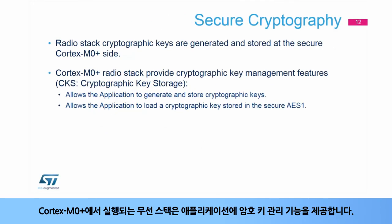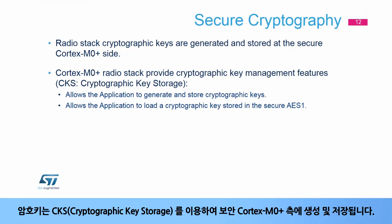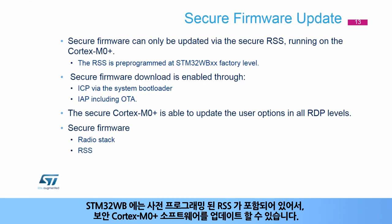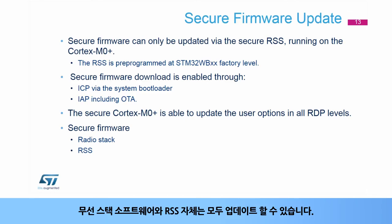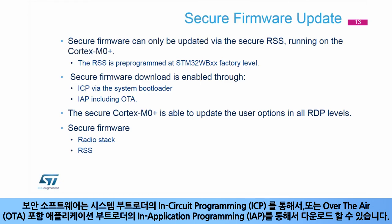The radio stack running on the Cortex-M0 Plus provides cryptographic key management to the application. The cryptographic keys are generated and stored on the secure Cortex-M0 Plus side using the cryptographic key storage, or CKS. The STM32WB includes a pre-programmed RSS, which allows the secure Cortex-M0 Plus software to be updated. Both the radio stack software and the RSS itself can be updated. Secure software can be downloaded via in-circuit programming by the system bootloader, or via in-application programming by an application bootloader, including over-the-air, or OTA.